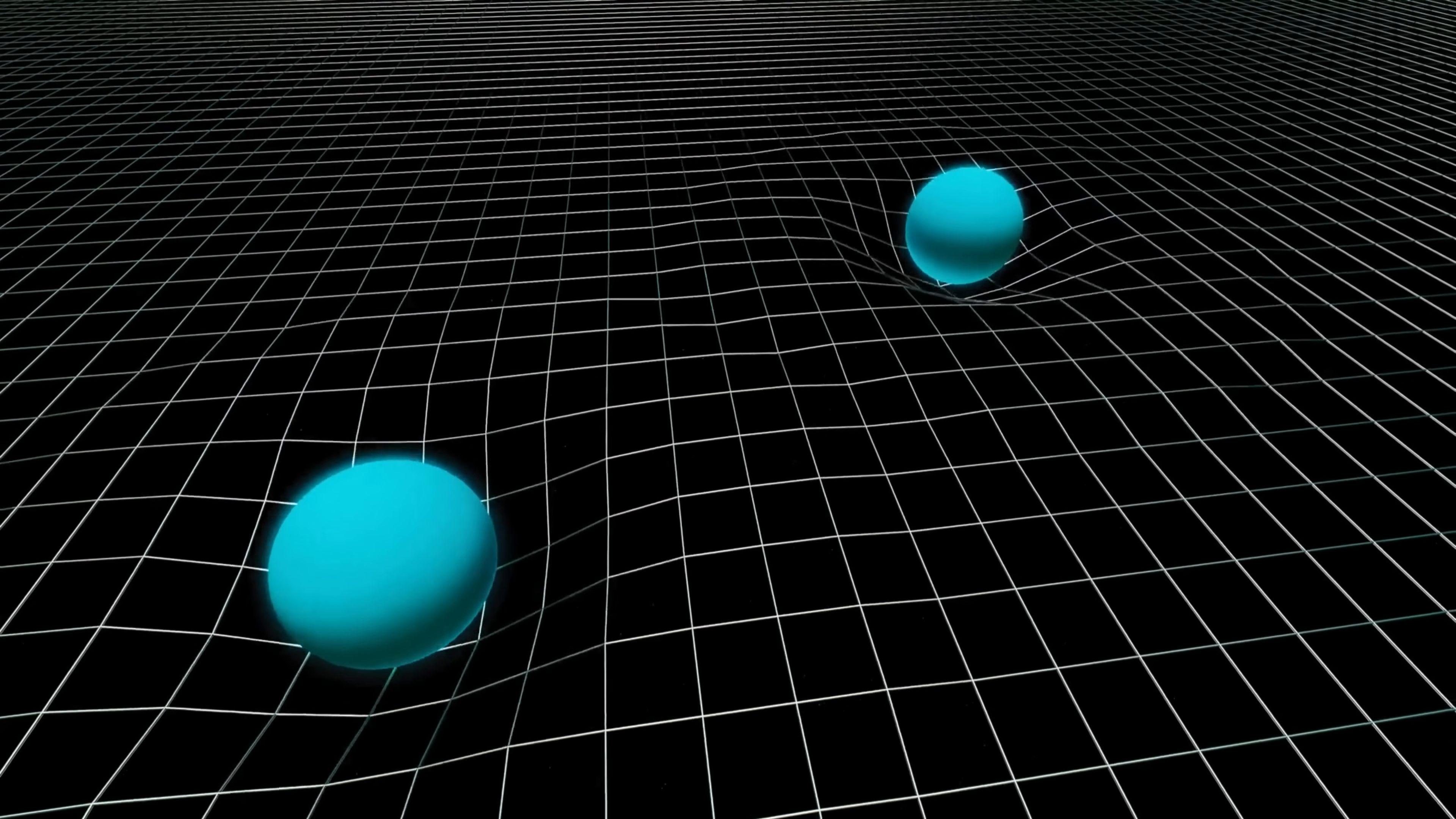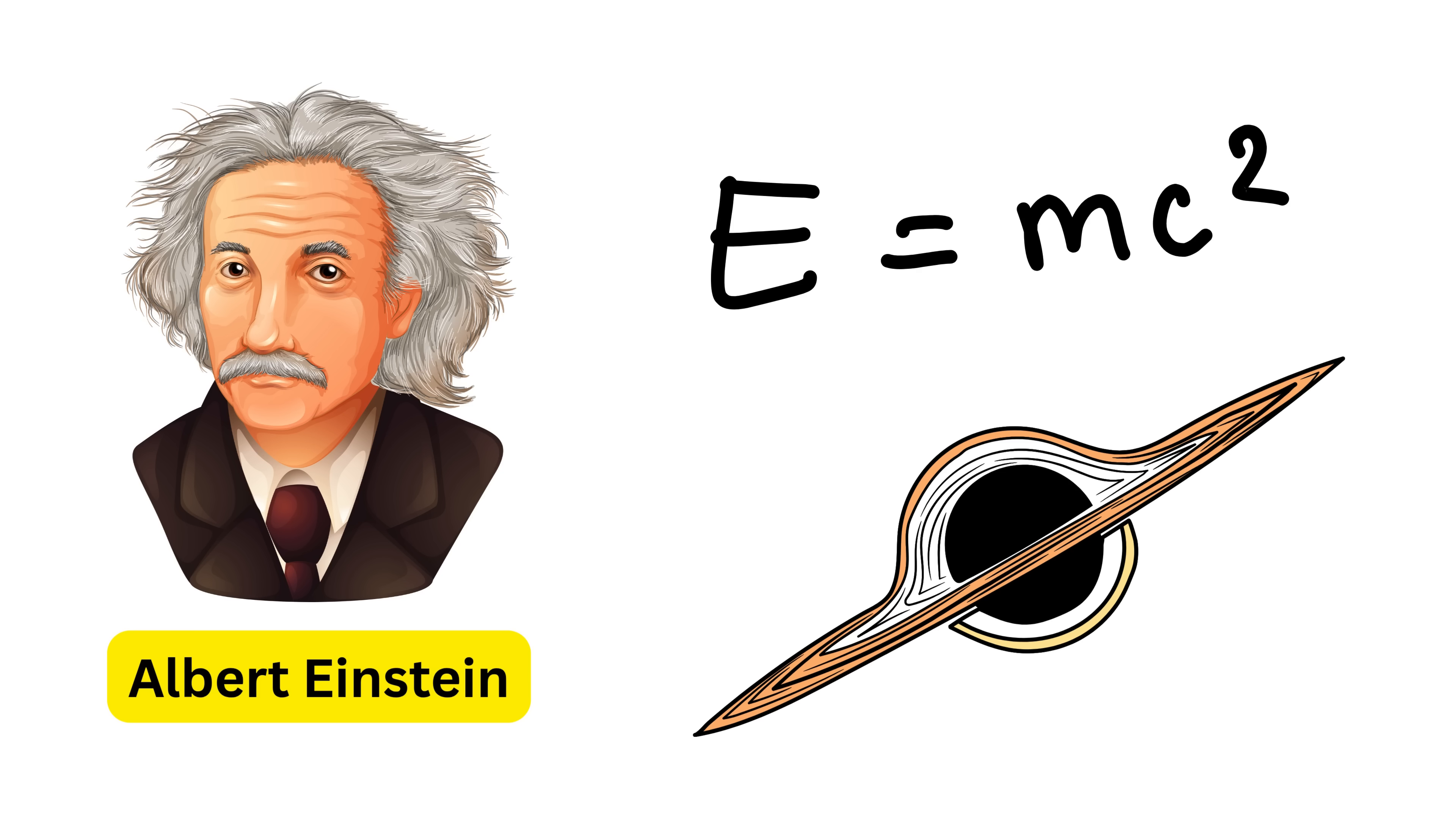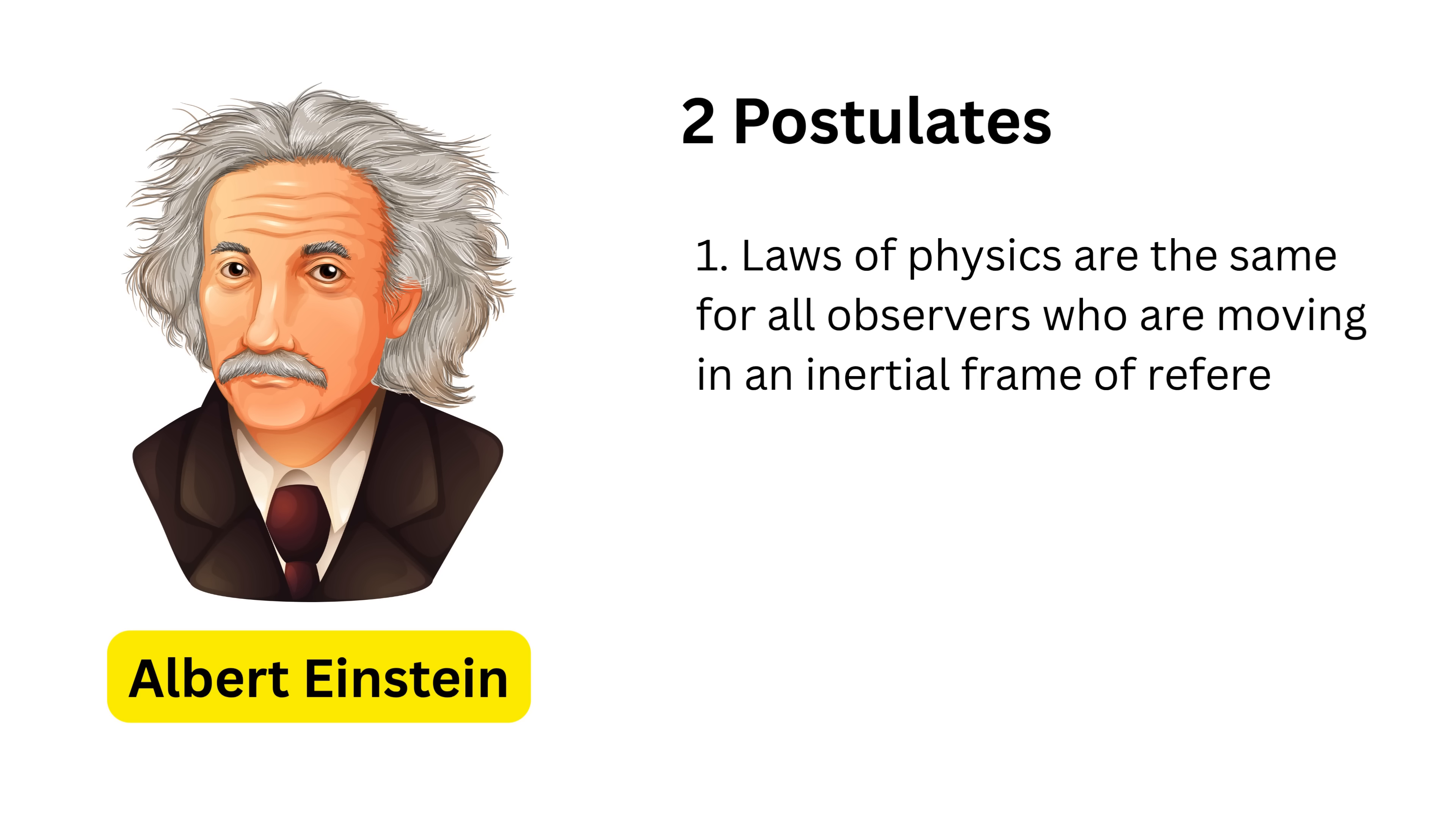Then came Einstein in the year 1905, and he completely changed the way we think about motion, space, and time. He introduced two bold postulates or basic assumptions that became the foundation of the special theory of relativity. The first postulate said that the laws of physics are the same for all observers who are moving in an inertial frame of reference, just as Galileo had suggested earlier. The second postulate said that the speed of light is always the same for all observers, no matter how fast they are moving or in which direction.